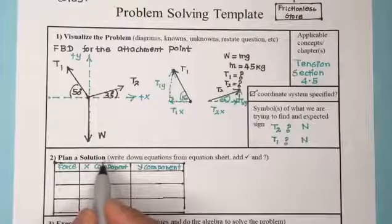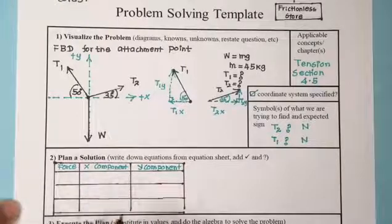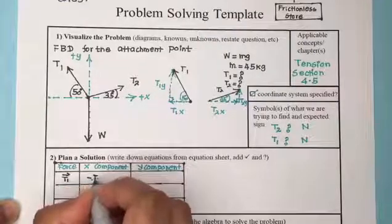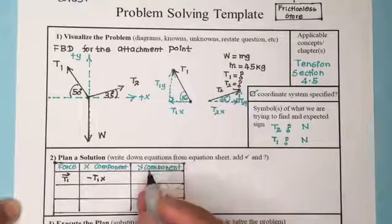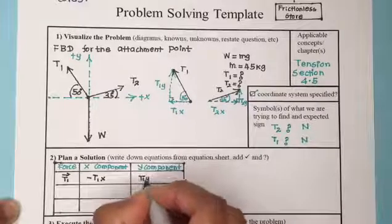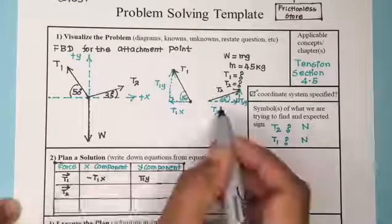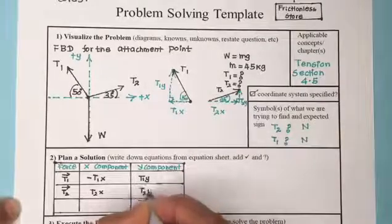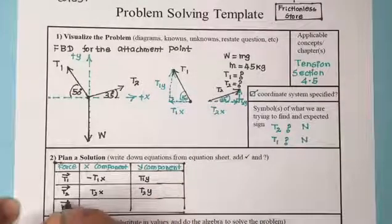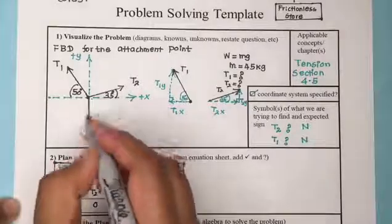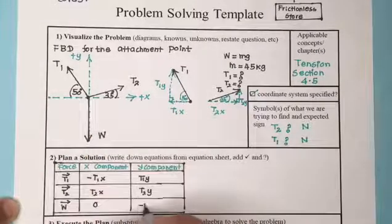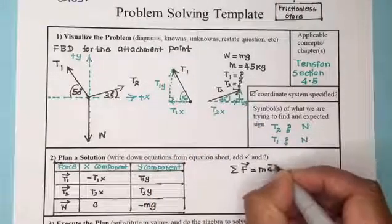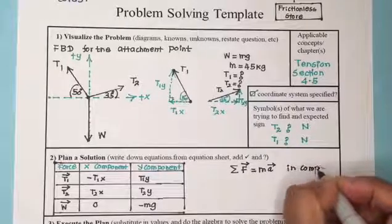Now we plan a solution by listing the components of each force. T1 has a negative x-component (going left) and a positive y-component going up. T2 has a positive x-component (going right) and a positive y-component going up. The weight has no x-component, and its y-component is negative because it points directly downwards.